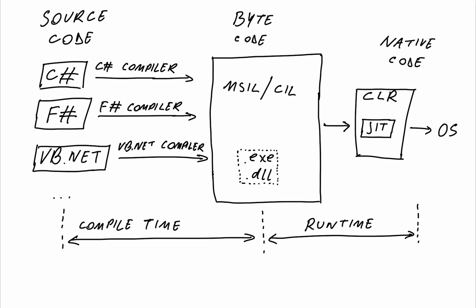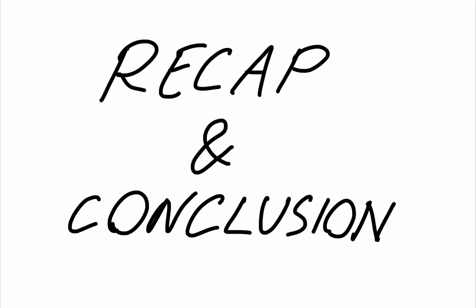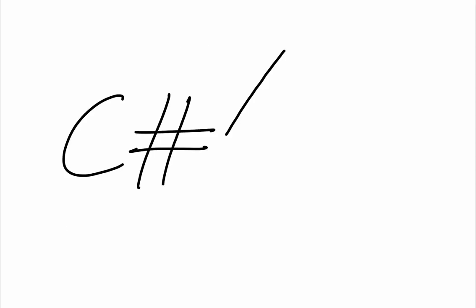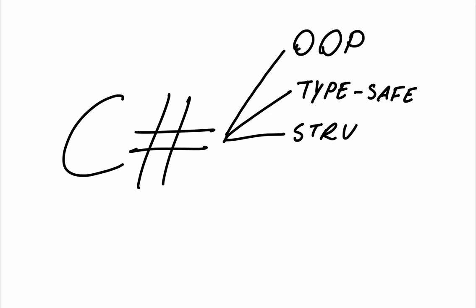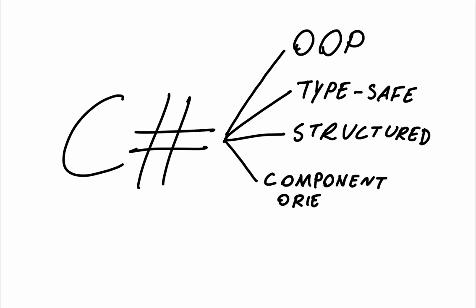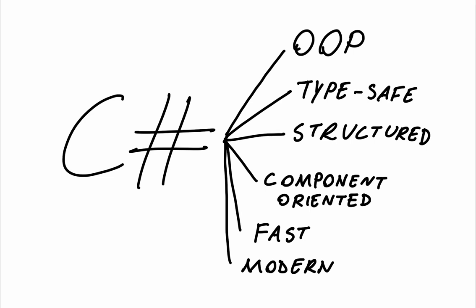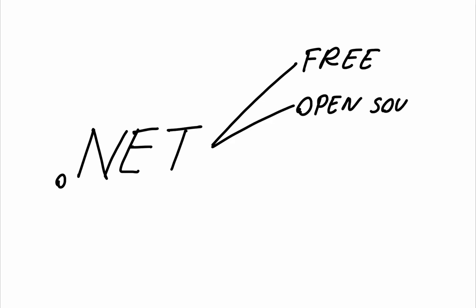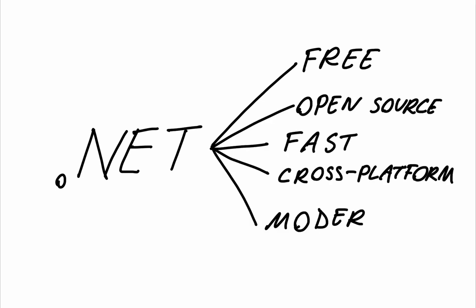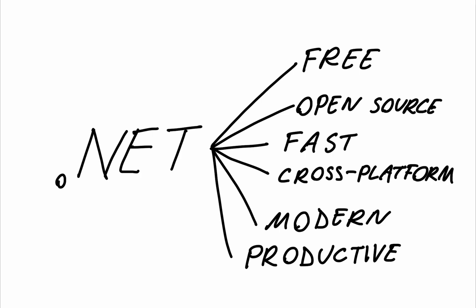As you can see, this is a two-step process: the first part happens at compile time, and the second part happens at run time. To recap: Microsoft managed to develop and improve two important components for programmers — the C-sharp language and the .NET environment. C-sharp is a programming language that is object-oriented, type-safe, structured, component-oriented, fast, and modern. And .NET is an environment that is free and open-source, fast, cross-platform, modern, and productive.